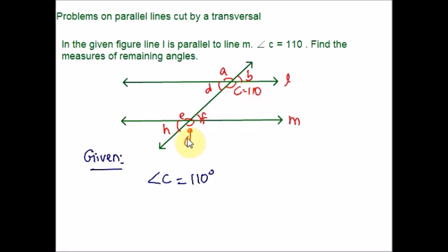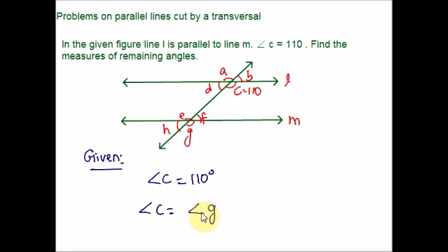Let us find the corresponding angle for C. G is in the same position for line M, so angle C and angle G are corresponding angles. We know the property of corresponding angles: corresponding angles are always equal. So angle C is 110 degrees, therefore angle G will also be equal to 110 degrees.